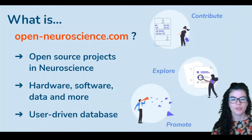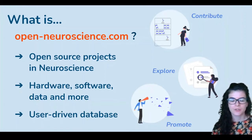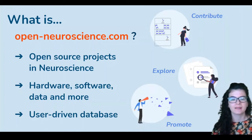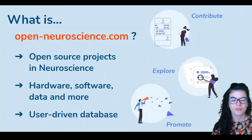We check each submission to make sure it is at least vaguely related to neuroscience, and more importantly, that it really is open, meaning that the source is readily available. Then we publish it on the site and announce it on Twitter.